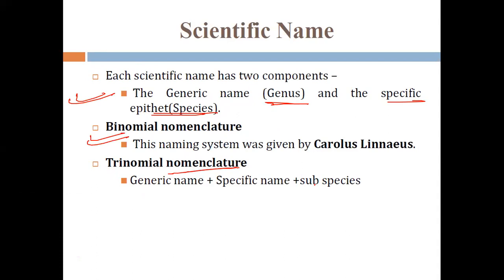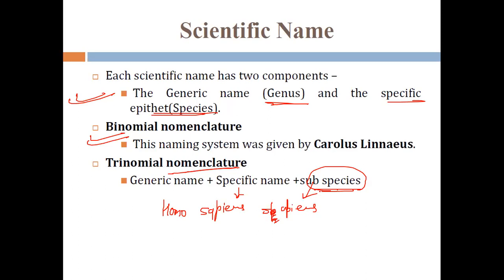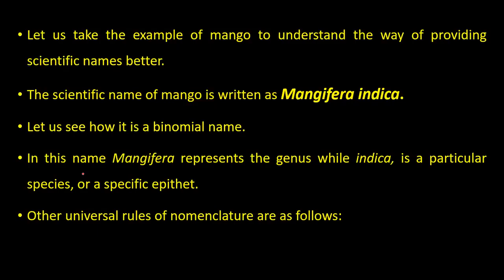An upgraded version is trinomial nomenclature, which includes subspecies as well. For example, our complete scientific name is Homo sapiens sapiens — the first 'sapiens' is the species and the second 'sapiens' is the subspecies. Trinomial nomenclature has three components, but for your exam you only need to have an idea of it.